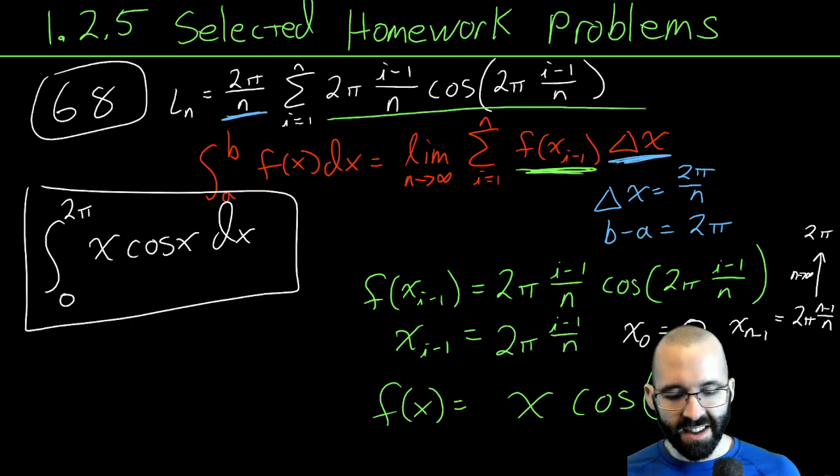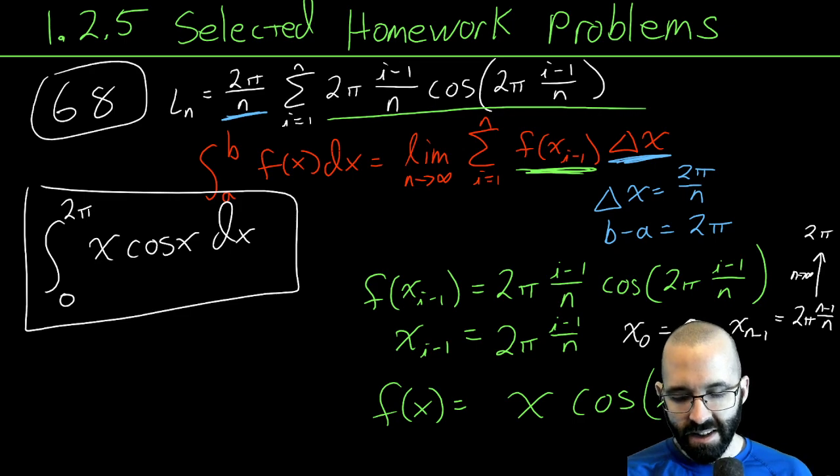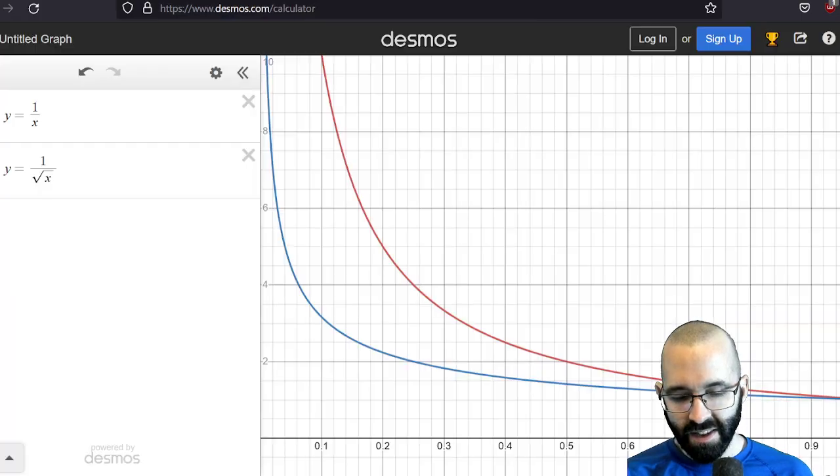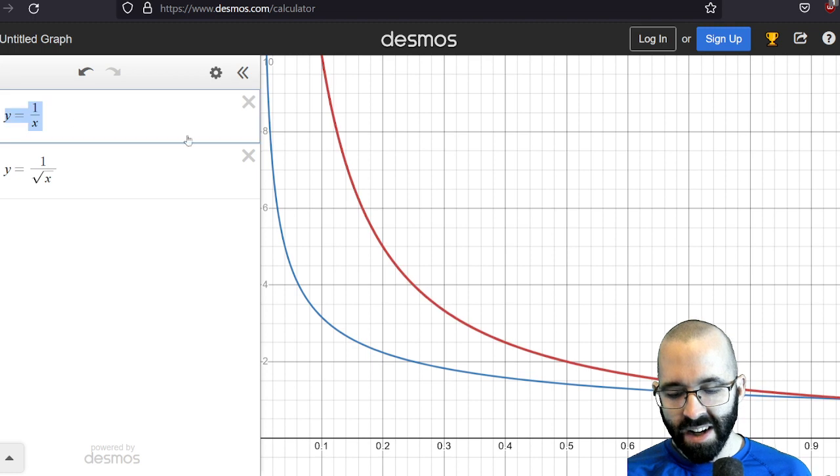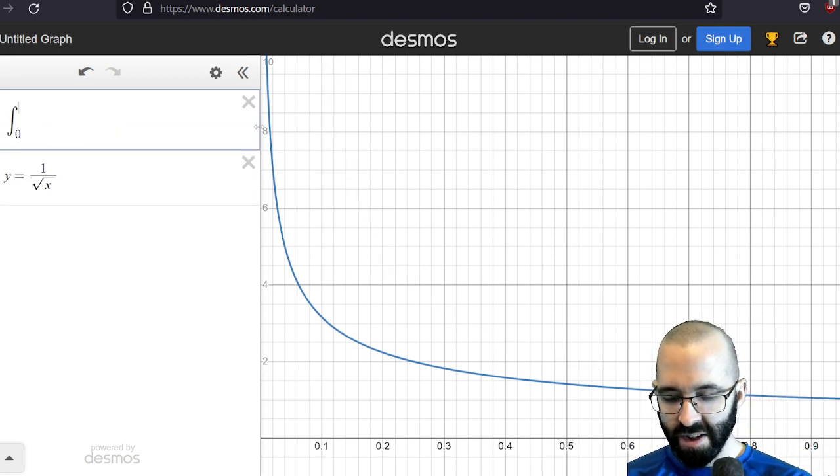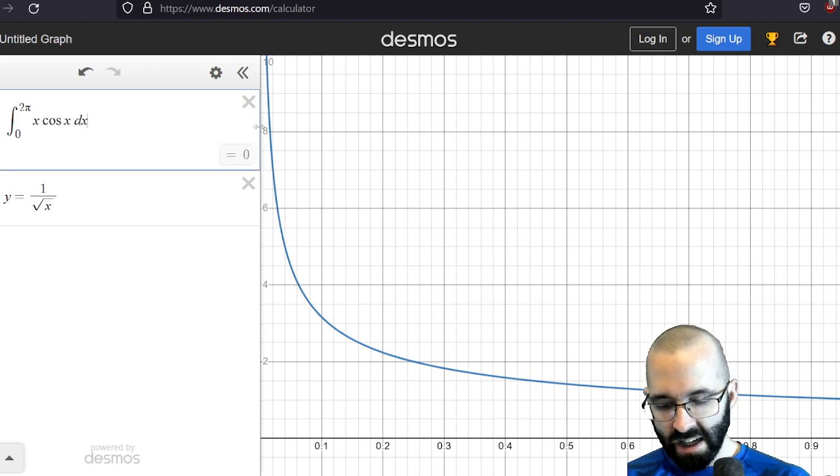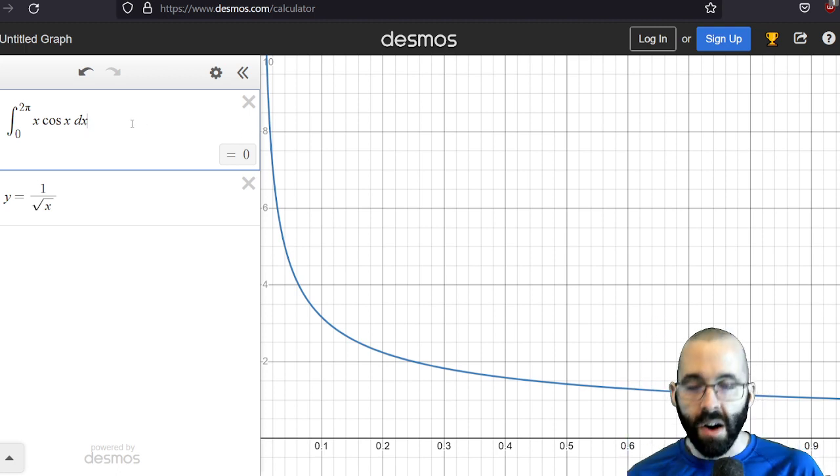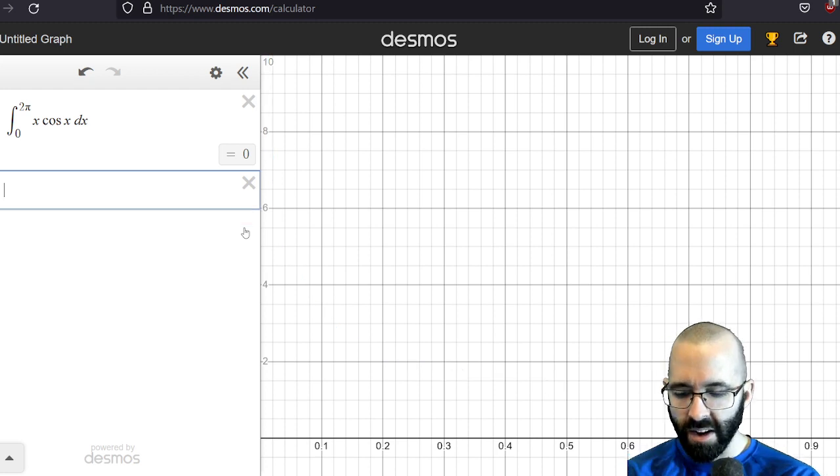There's some cool ways of visualizing this too. Can we do the integral from 0 to 2π of x cos(x) dx? It's 0. Did you make a mistake? Why is it 0? Well, let's look at the function.